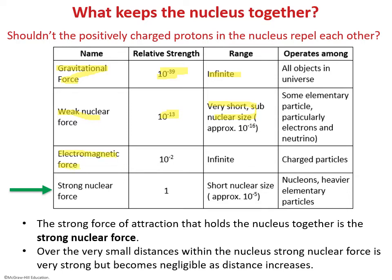The electromagnetic force is present between all charged particles — for example, protons repelling each other or protons attracting electrons. It is very strong compared to gravity and the weak force, and its range is also infinite, though it is inversely proportional to distance. The last and most important force here is the strong nuclear force, which is the force of attraction within the nucleus that holds it together. It is very strong but operates over a very small range.